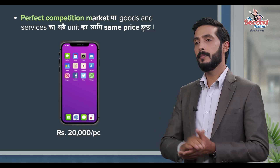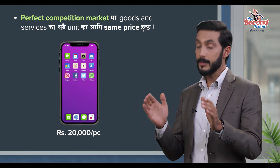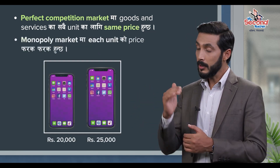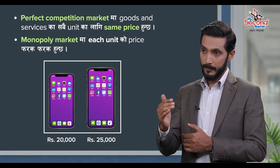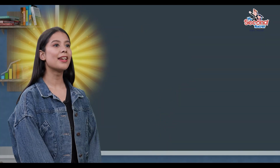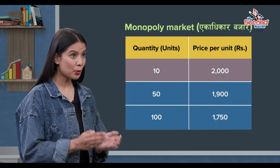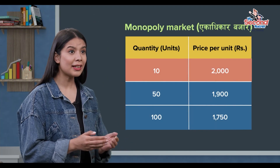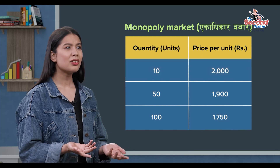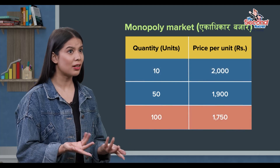In the perfect competition market, every unit of goods and services has the same price. But in the monopoly market, each unit also has the same price. The monopoly market has the same price, so many units can charge a high-price unit — so the price is the same, right?